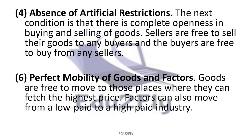Perfect mobility of goods and factors: goods or factors — factors being labor, capital, etc. — are free to move from one place to another. For example, labor can move from one place to another. If one industry has a low salary, the worker can move to a high-paid industry. This is perfect mobility.